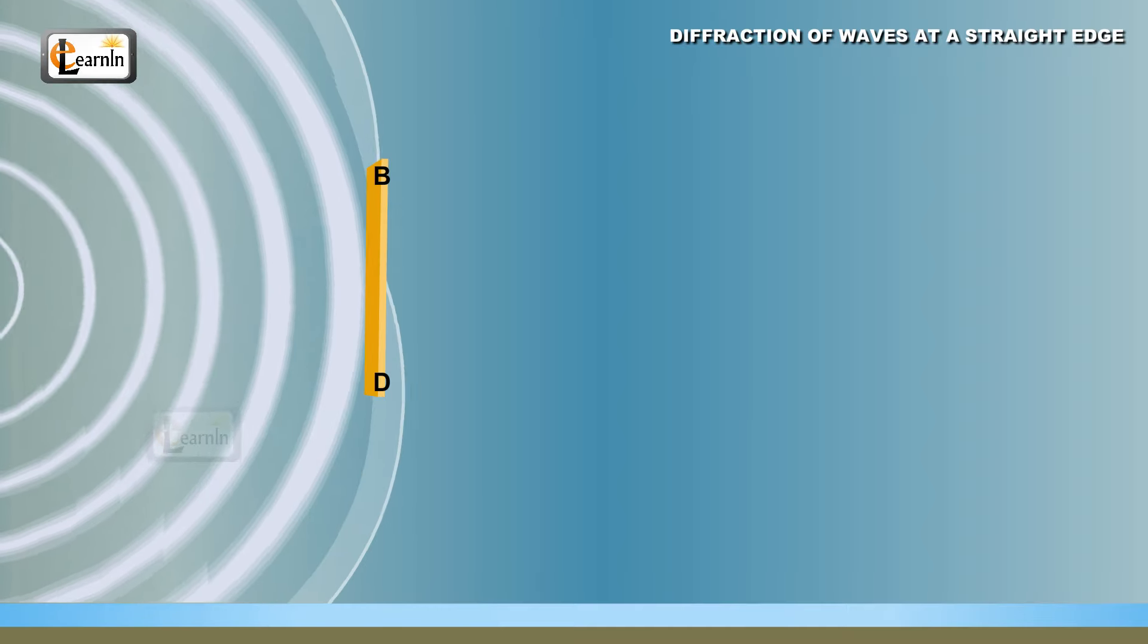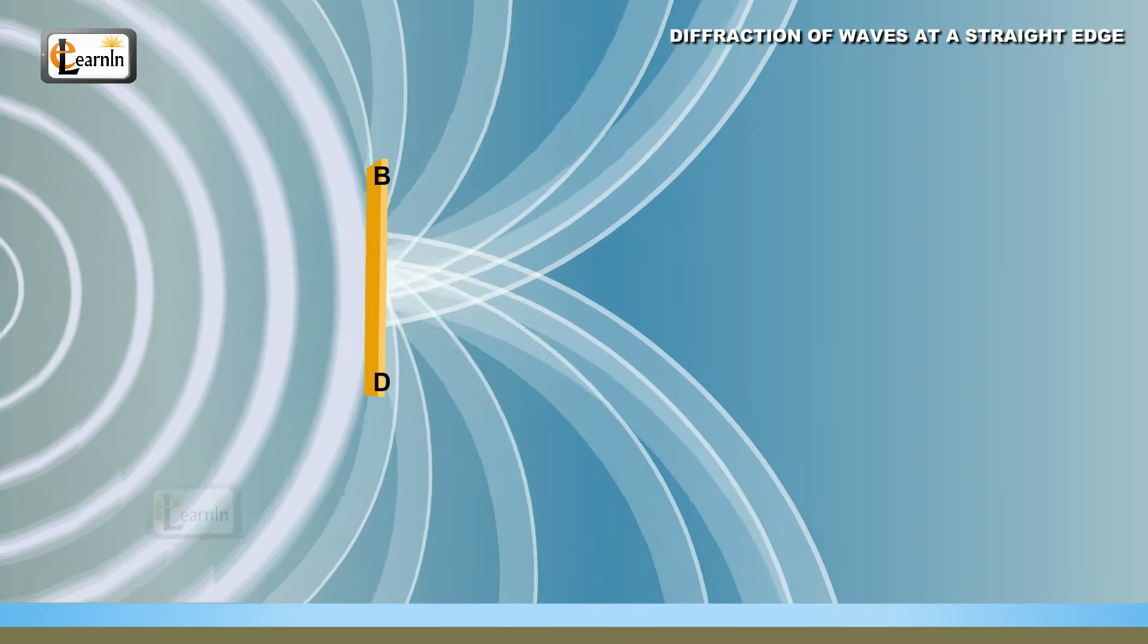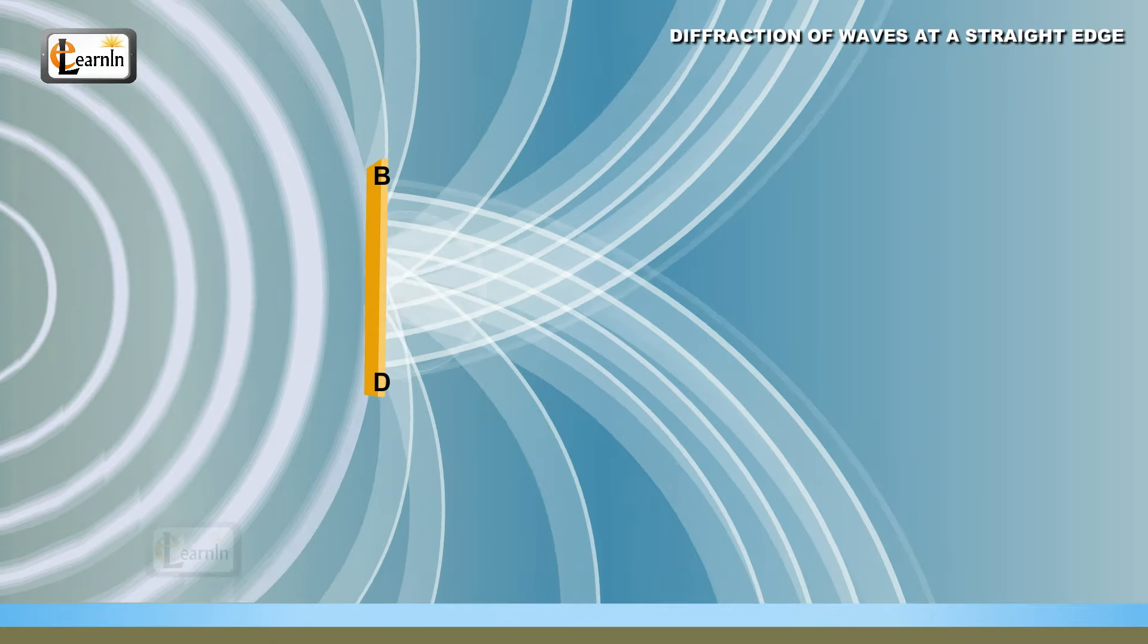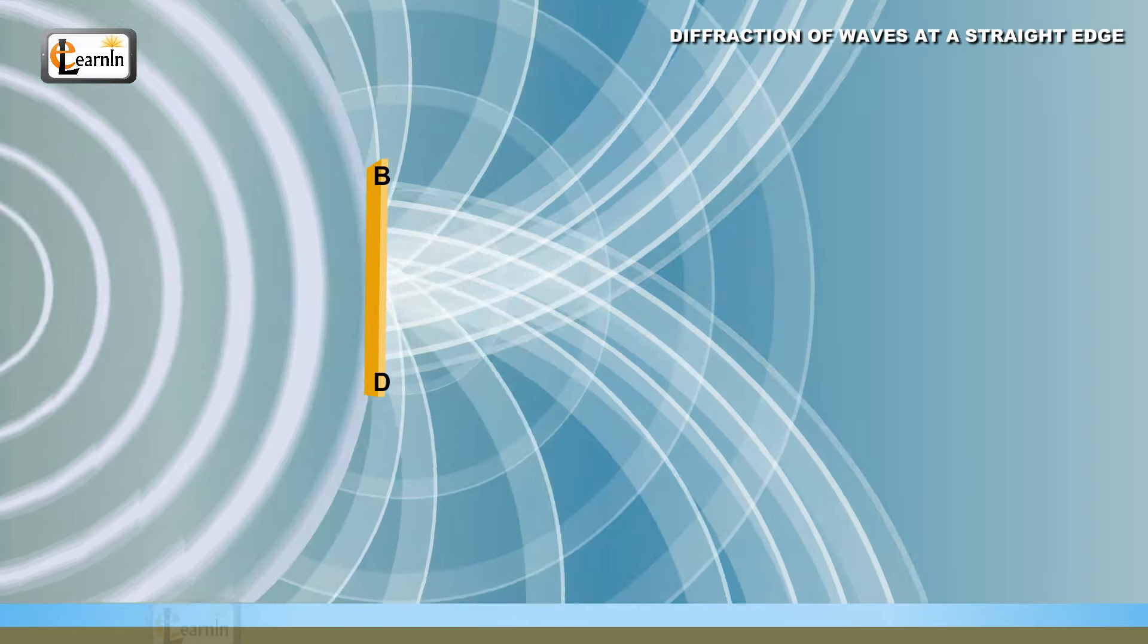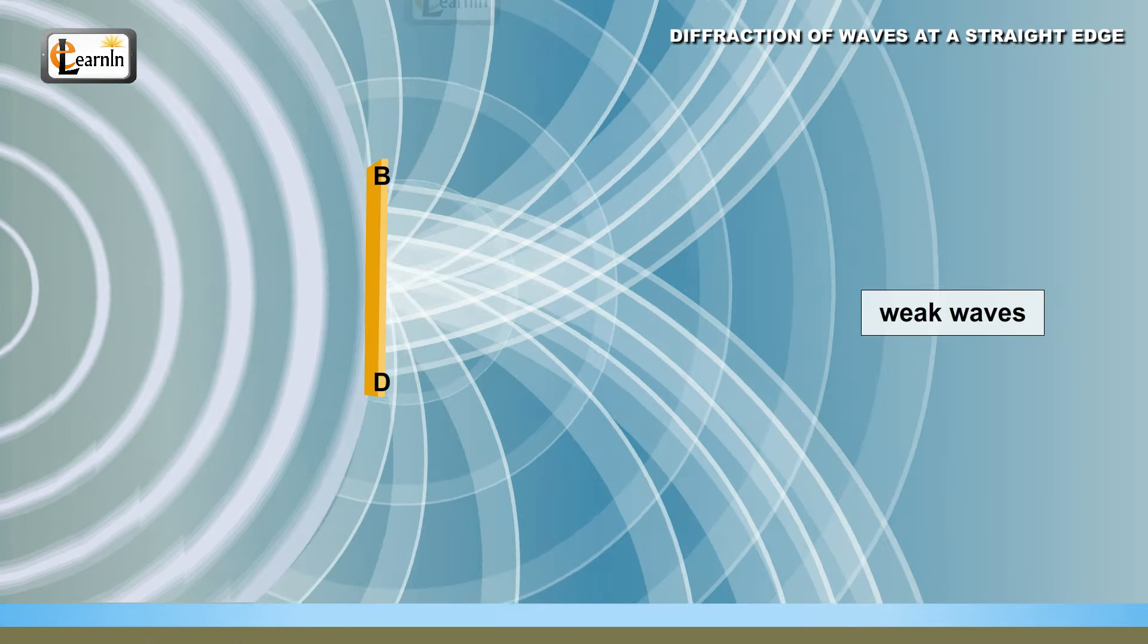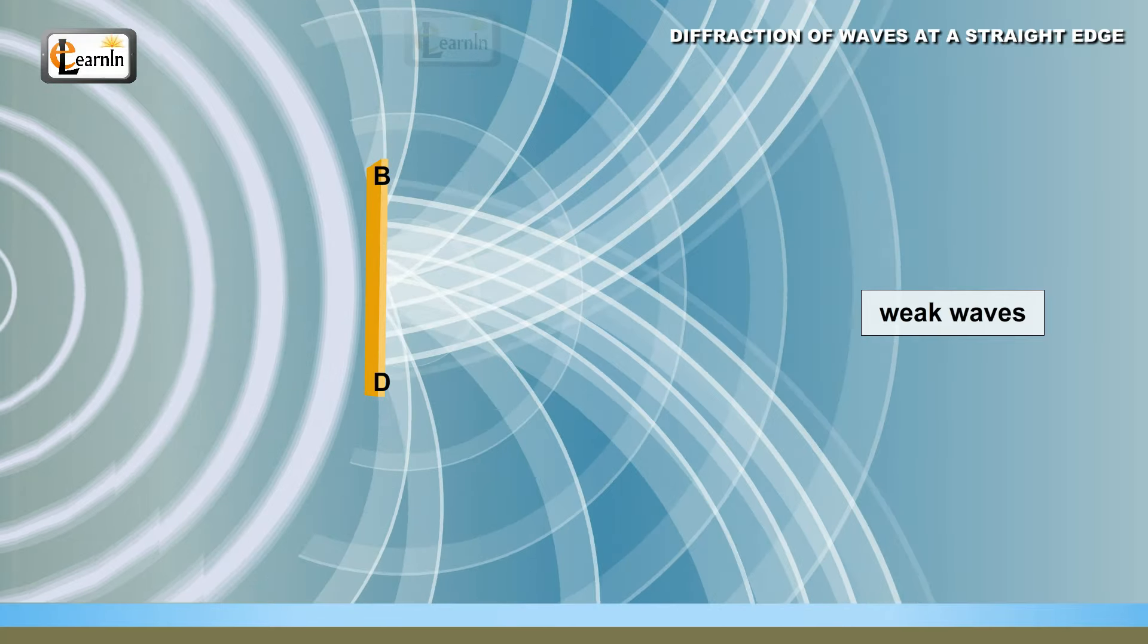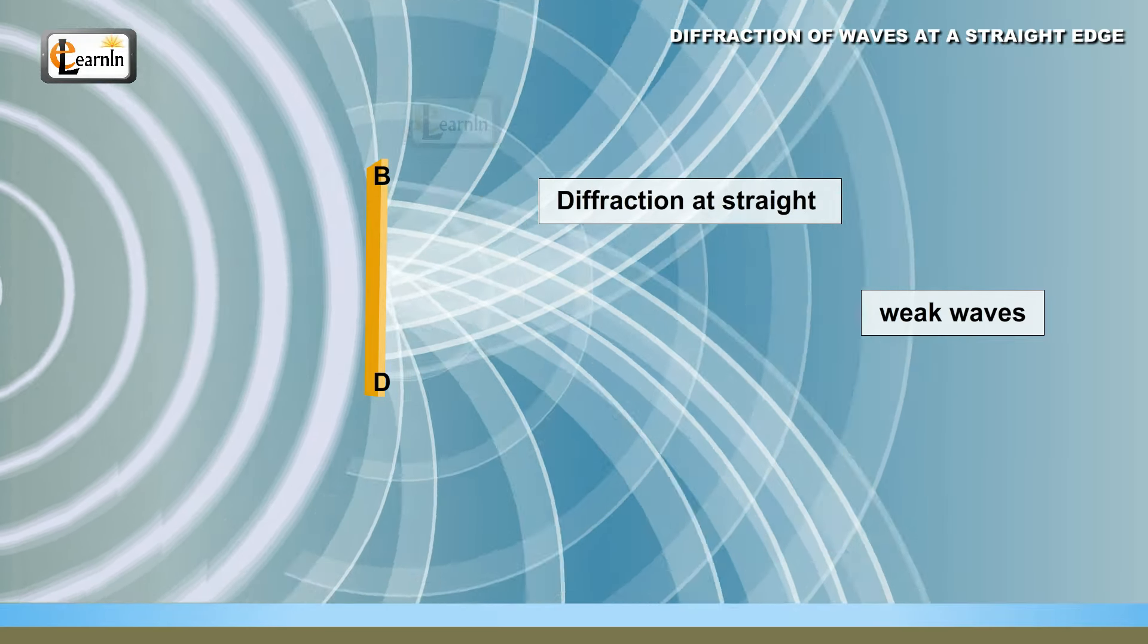At this point, if there is no bending of the waves, the lower portion of the circular wave fronts should be cut off completely. Only the upper portion above the straight line should travel beyond the scale. But sometimes there are some weak waves which spread out into the lower region. This bending is called diffraction at straight edge.